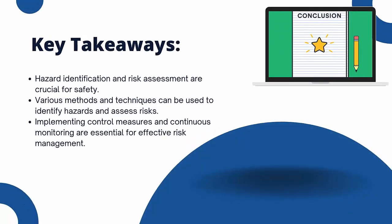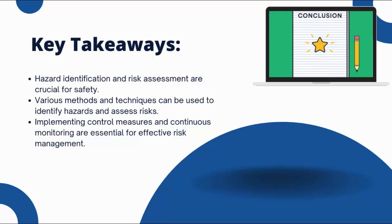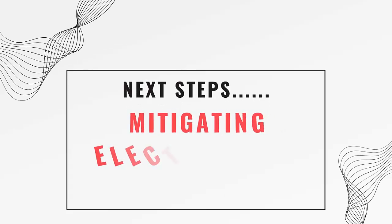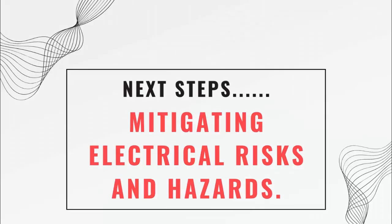To summarize, hazard identification and risk assessment are essential for workplace safety. Various methods and techniques can be used to identify hazards and assess risk. Implementing control measures and continuous monitoring are key to effective risk management. Thanks for joining this lecture. In the next module, we will discuss practical applications of this process in your workplace. Stay tuned and stay safe. Remember, proactive hazard identification and thorough risk assessment are most important for maintaining a safe and efficient work environment. Always prioritize safety in all operations.